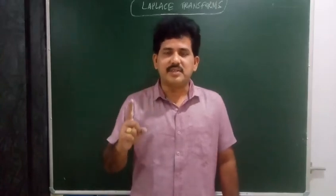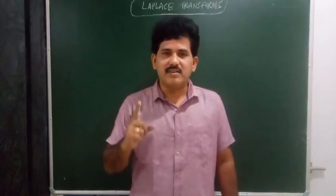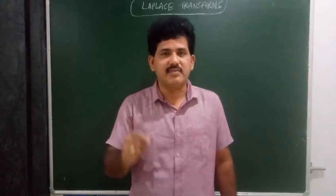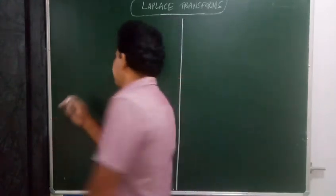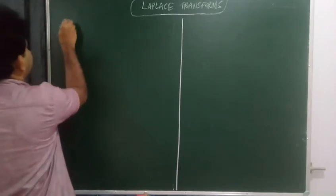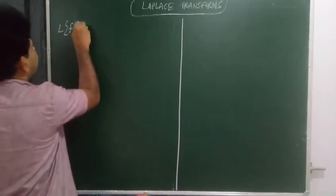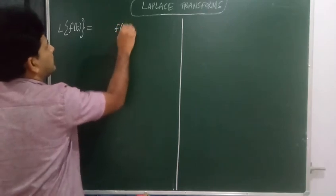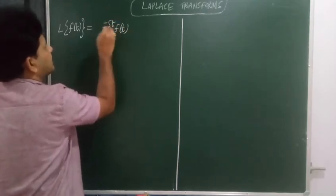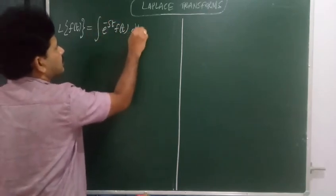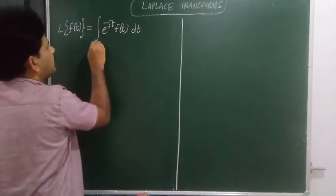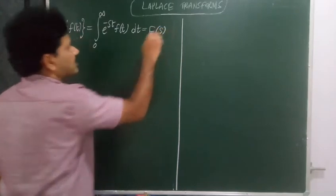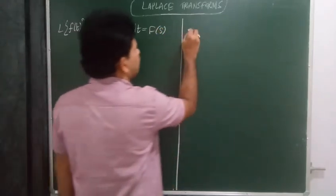In this video, we are going to discuss all formulas related to Laplace transform. The basic definition of Laplace transform of f(t) is: L{f(t)} equals the function f(t) with kernel e to the power minus st, integrated with respect to the time variable t between the limits 0 to infinity, that gives a function in terms of the parameter s.